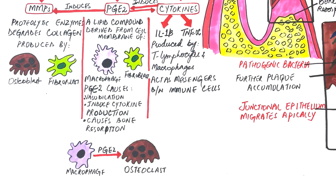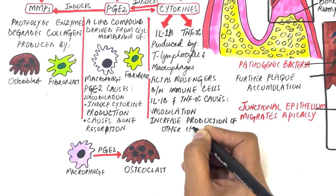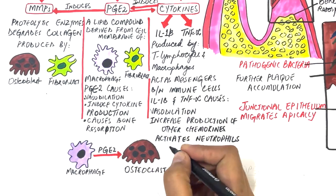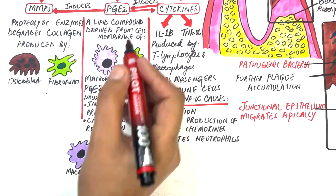Although neither interleukin-1-beta nor TNF-alpha is directly involved in the stimulation of bone resorption, they indirectly promote bone destruction by stimulating sustained inflammation of the periodontal tissues. TNF-alpha and interleukin-1-beta cause vasodilation, activate endothelial cells to increase recruitment of immune cells, increase production of chemokines, participate in activation of neutrophils, and stimulate the secretion and tissue activation of PGE2 and MMPs.